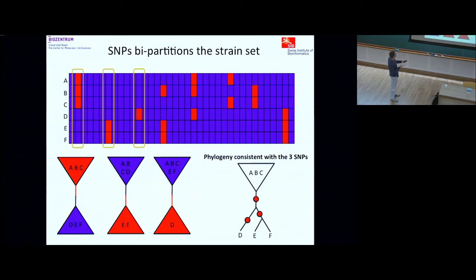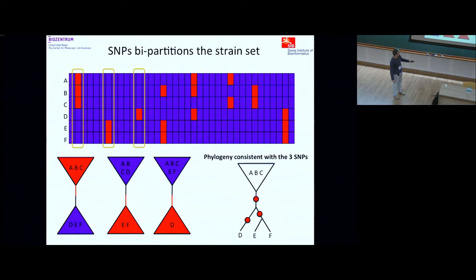Each strain is a bipartition of the set. You can often combine these — if I take three SNPs I can make a tree consistent with all of these bipartitions. But you can also have clashes: if one column says B, E, and F must form a subclade, but another column says A, B, and C must form a subclade, these two things are not compatible with each other. So by the time I get here I need another phylogeny.